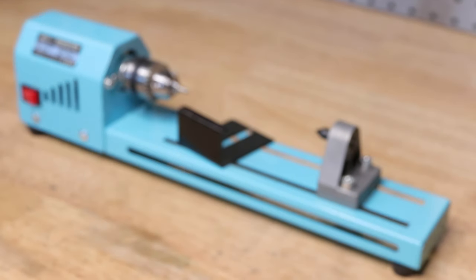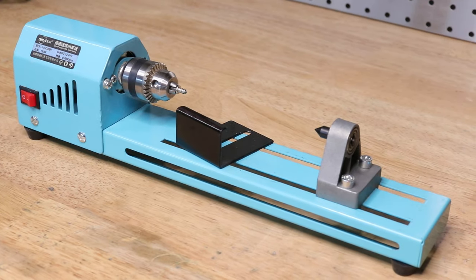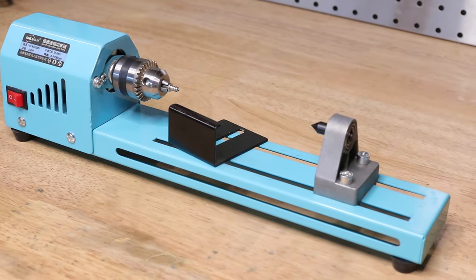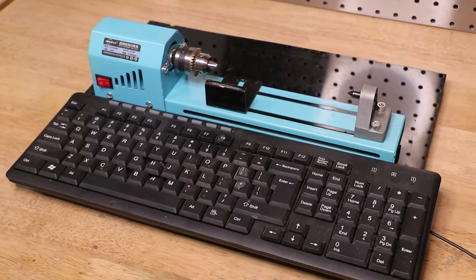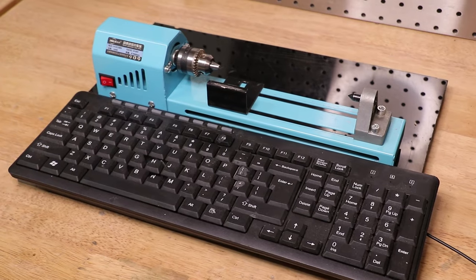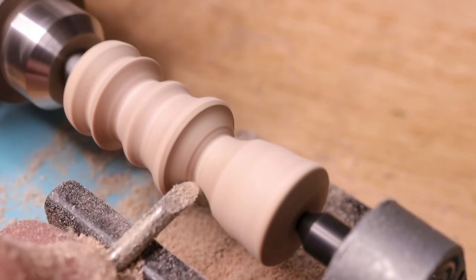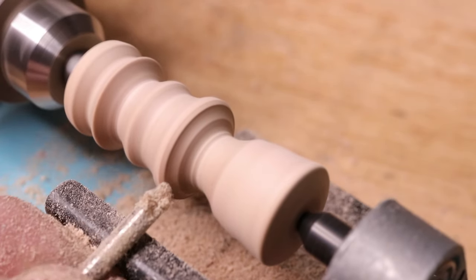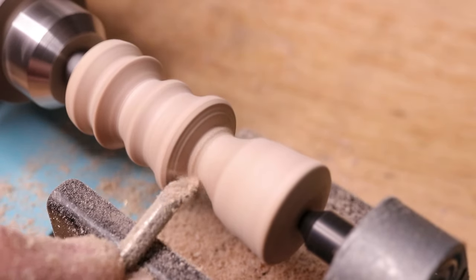Overall, the lathe seems to be pretty solid for its size, which is actually pretty small. It's only 34 centimeters long by 5 centimeters wide and 8 centimeters tall. It's actually smaller than a full-sized keyboard. In terms of work size, it can hold a maximum piece which is 150 millimeters long by 60 millimeters in diameter. Without work area, it should be big enough to make small wooden handles and knobs.